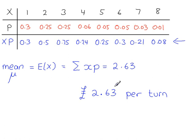So, if the person running this game was charging 2.63 to have a go, then they would break even. If they charge more than 2.63 pounds per turn, then they make a profit. So, for example, let's say the cost for one spin is 3 pounds.